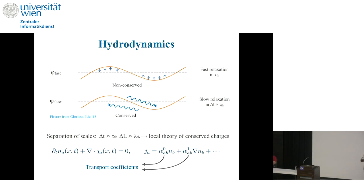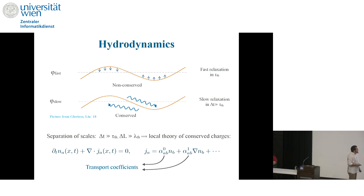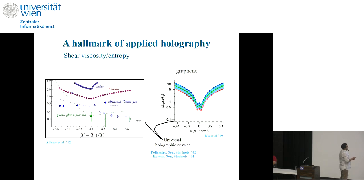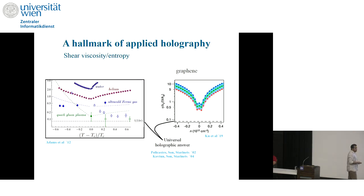To summarize hydrodynamics: you have conservation equations for some charge densities and corresponding currents. The fact that you can apply thermodynamics locally means you can expand your current in terms of a derivative expansion of the charge densities. This derivative expansion comes with transport coefficients. One key role gauge-gravity duality has been playing is to compute these transport coefficients at strong coupling. One such transport coefficient, the shear viscosity, has always been a hallmark of applied holography. As you can see in these plots, quark-gluon plasma, ultra-cold Fermi gases, and even graphene at the charge neutral point come very close to the universal holographic answer.